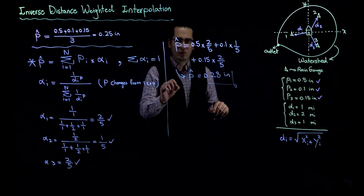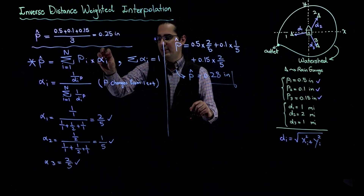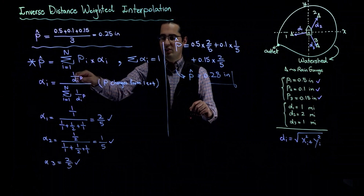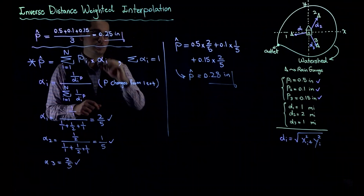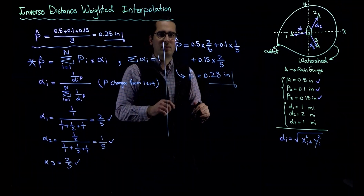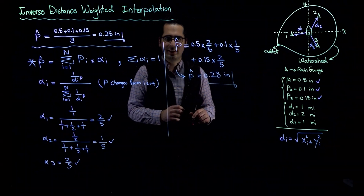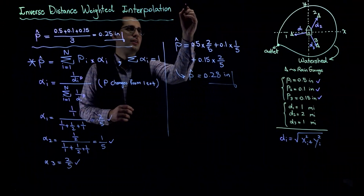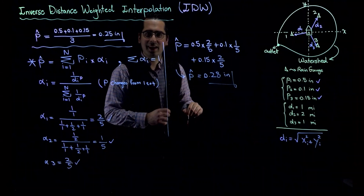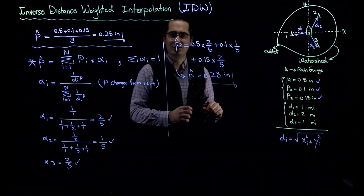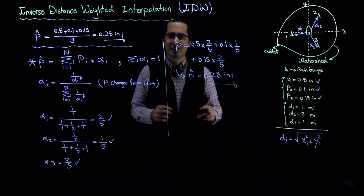Notice that when you add a weight that is a function of the inverse of distance, this number — 0.28 inches — is slightly different from the arithmetic mean result of 0.25 inches, because this is another method of interpolation. This method is called Inverse Distance Weighted interpolation, or IDW interpolation. In the next videos, you'll learn how to use a spreadsheet such as Excel to automate this process.